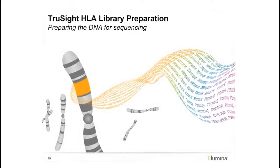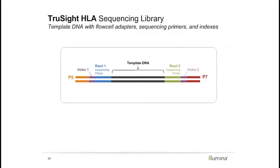The library prep step creates libraries with P5 and P7 adapters on the ends — complementary sequences to the oligo lawn on the flow cell, allowing libraries to attach. Within those adapters are index primers, the barcodes that allow you to put multiple samples and loci on the same run. After sequencing, index sequences assign each read to the appropriate sample and locus. Read 1 and Read 2 sequencing primers initiate sequencing by synthesis, with the template DNA in between. The goal of TruSight HLA library preparation is to get your DNA into this format for sequencing.